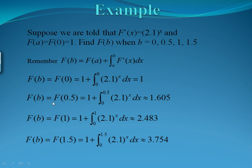If we want to evaluate when b equals 0.5, that'll equal f of 0, our starting point, which was 1, plus now the integral from 0 to 0.5 of 2.1 to the x dx. You'll put this integral in your calculator and add 1, and we'll get a value of 1.605.